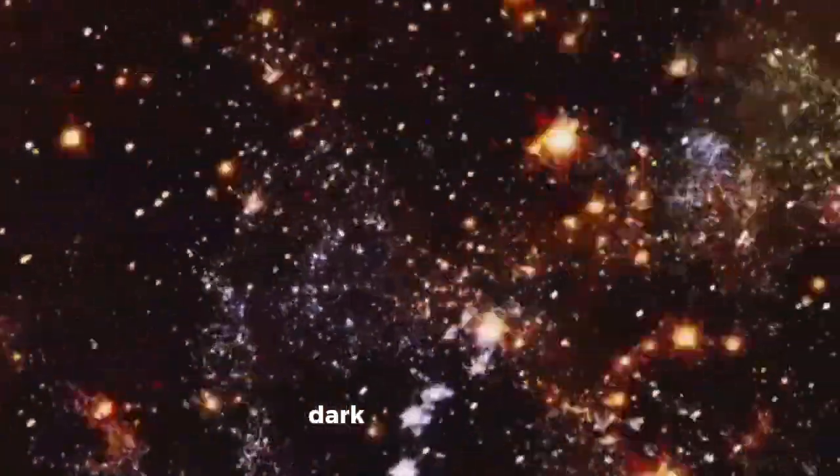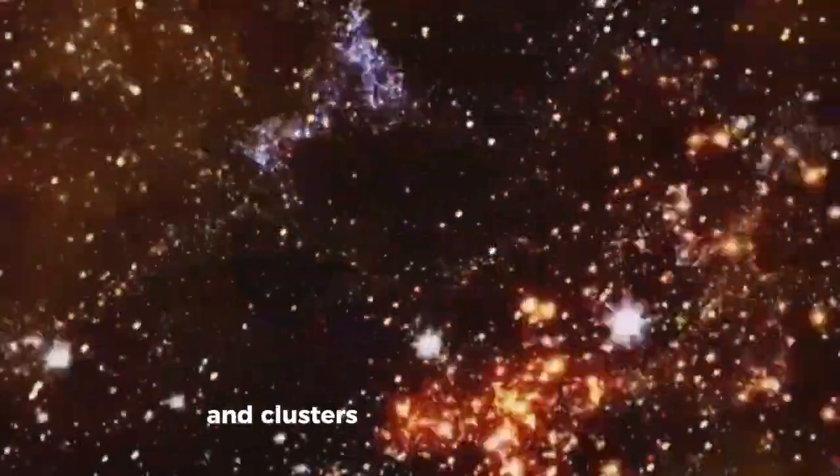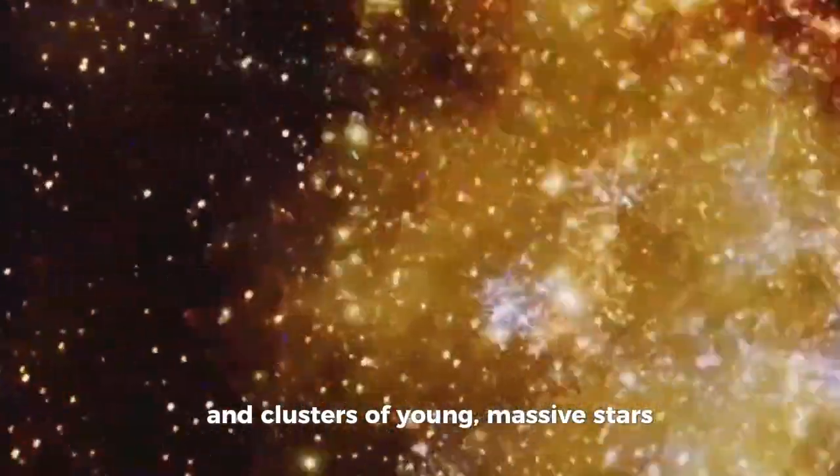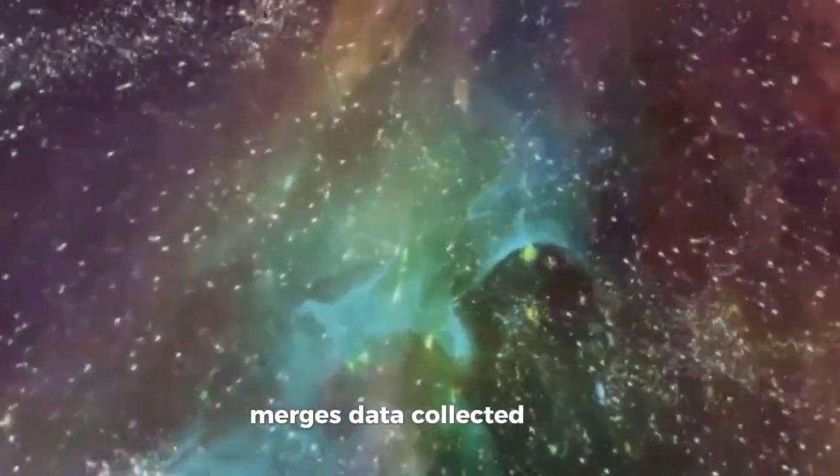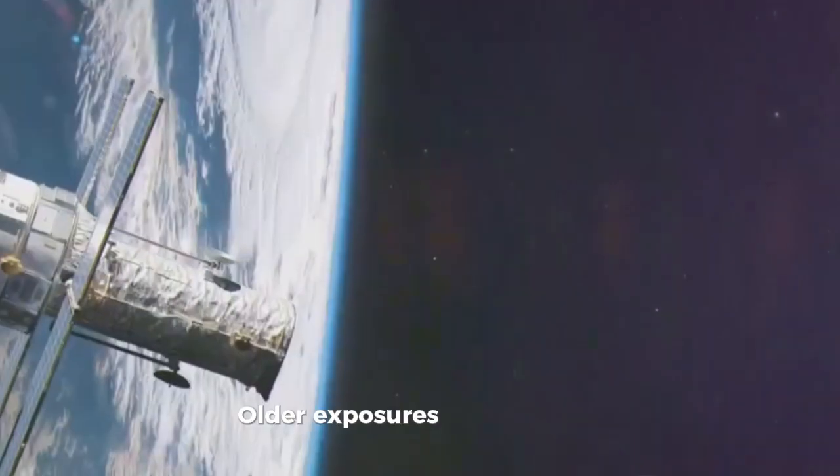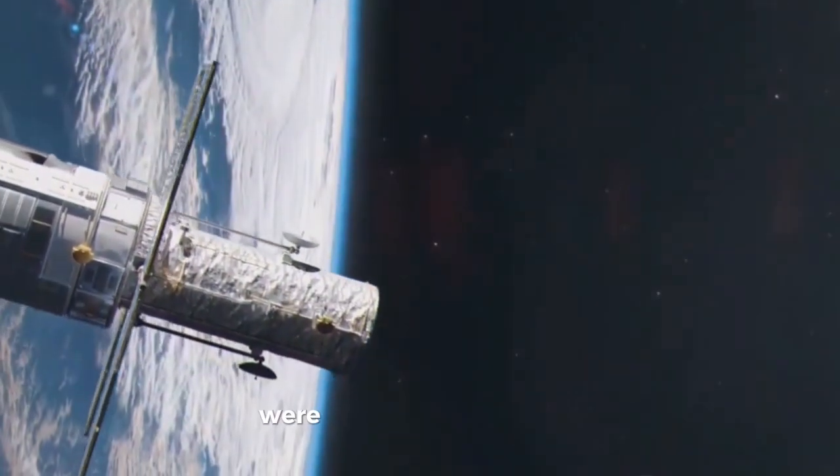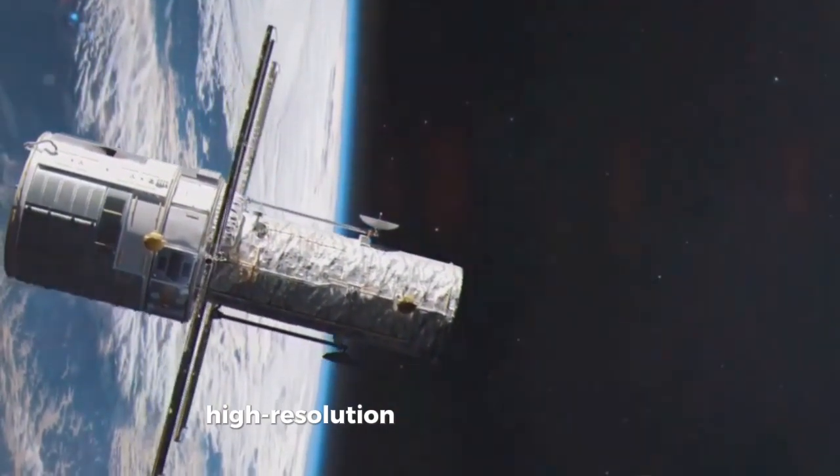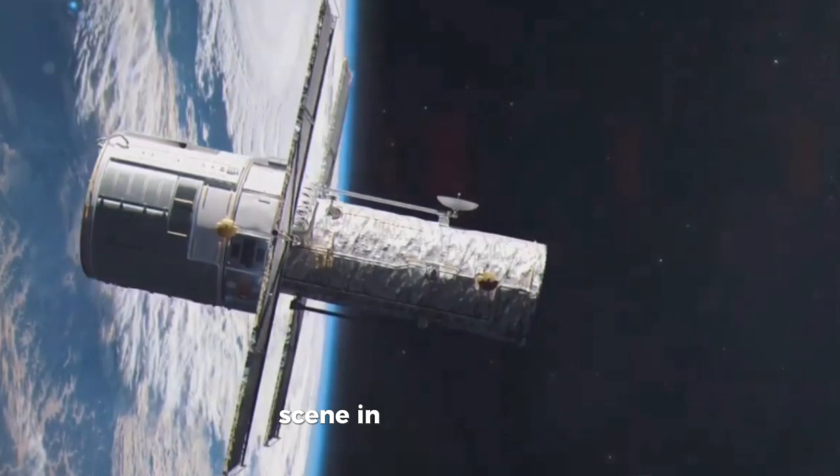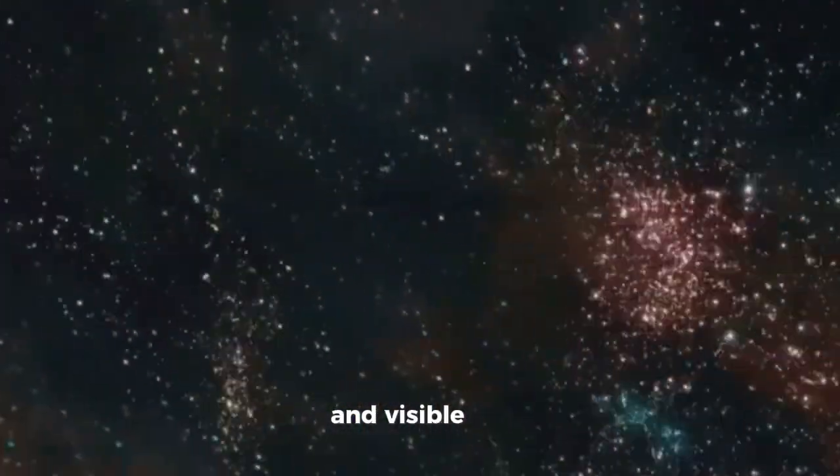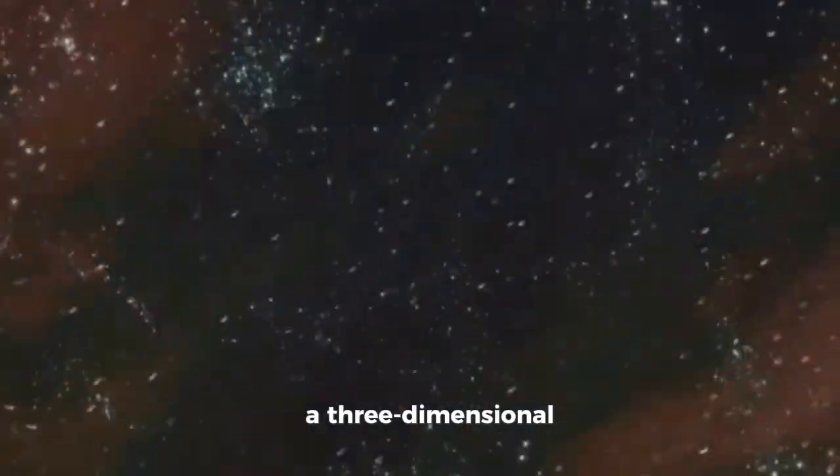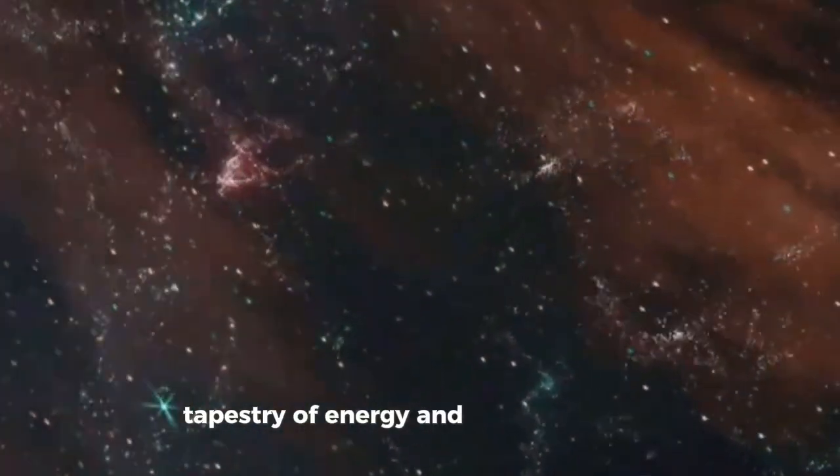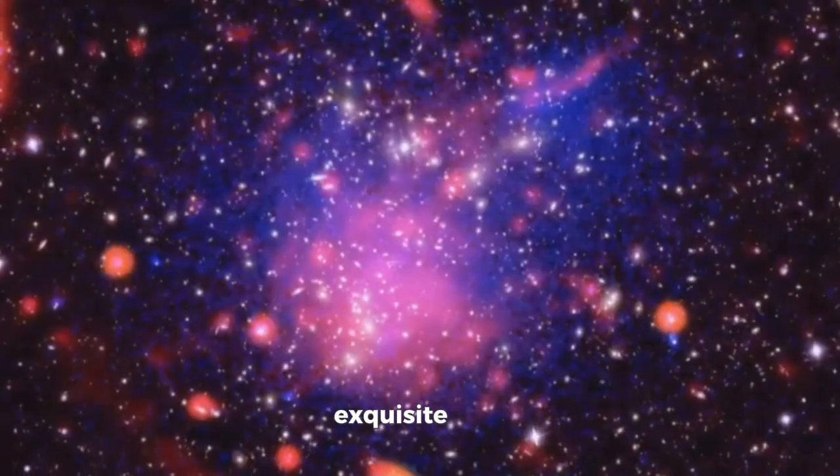Glowing gas, dark dust filaments, and clusters of young, massive stars fill the scene. What makes this observation so special is how it merges data collected across decades by Hubble's cameras. Older exposures from the early 2000s were combined with newer high-resolution images to reveal the scene in both ultraviolet and visible light. The result is a living portrait of stellar birth, a three-dimensional tapestry of energy and motion frozen in exquisite detail.